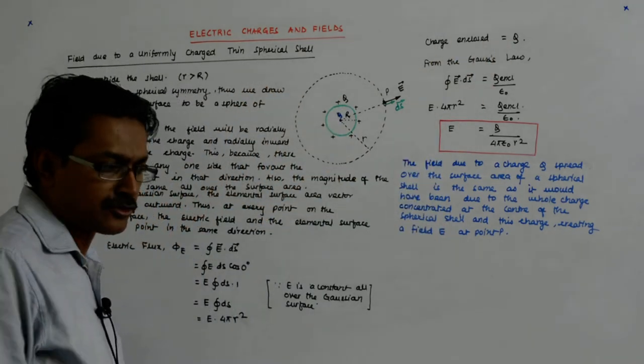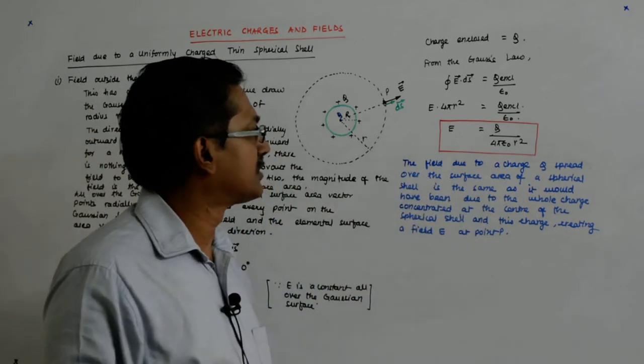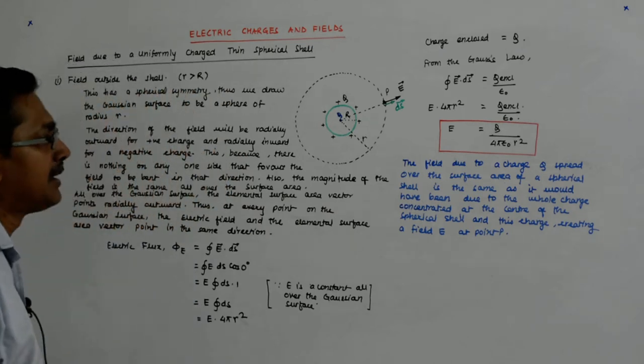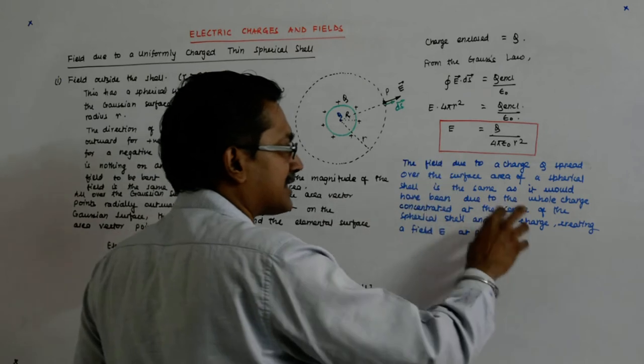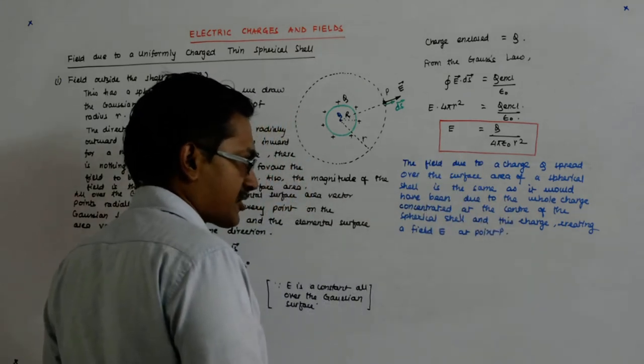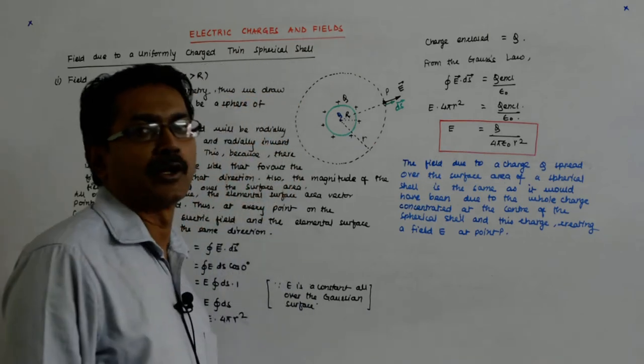There is no difference between them. The field due to charge spread over the surface of a spherical shell is the same as it would have been due to the whole charge concentrated at the center of the spherical shell, creating a field E at point P.